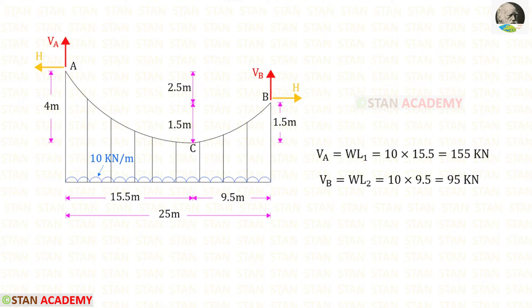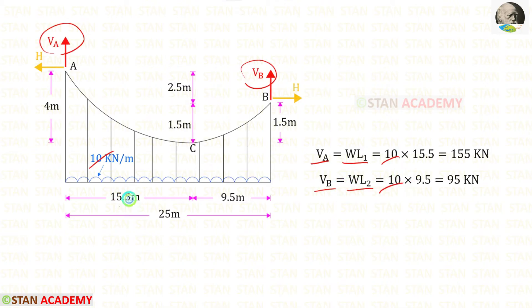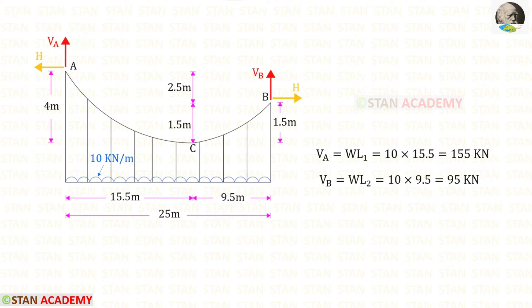Now let us find the vertical reactions Va and Vb. We know the formulas: Va = W·L1 and Vb = W·L2. Here W is 10 kN/m, L1 is 15.5 m, and L2 is 9.5 m. After the calculation, we will get Va and Vb.